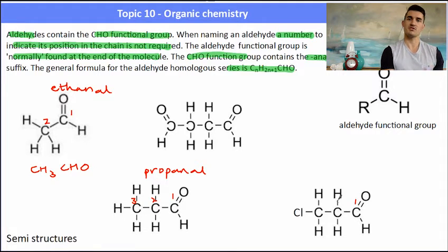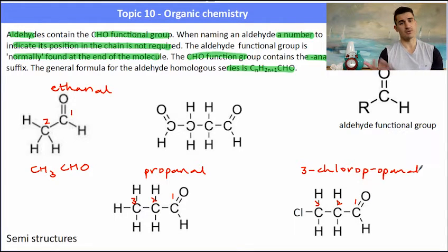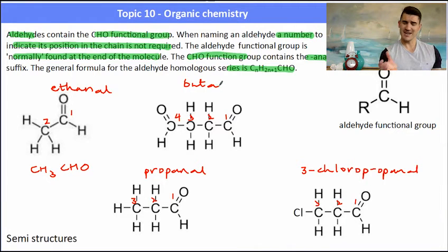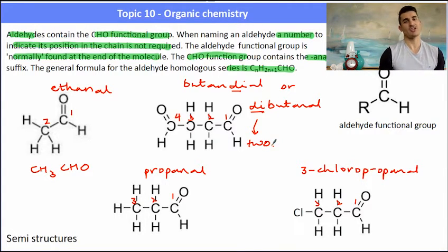The one below it — three carbons — propanal. Further to the right, here we have a chlorine on the chain. The number one carbon is the aldehyde, so we have 3-chloropropanal. Here we have something with four carbons and two aldehyde functional groups. When we have two of the same thing we refer to it as a '-dial'. We don't need a number because we know they can only be at the ends. So that would be butanedial — or di-butan-al, either would be acceptable. Remember with the semi-structural formula: CHO, not COH, because OH represents an alcohol or hydroxy functional group.